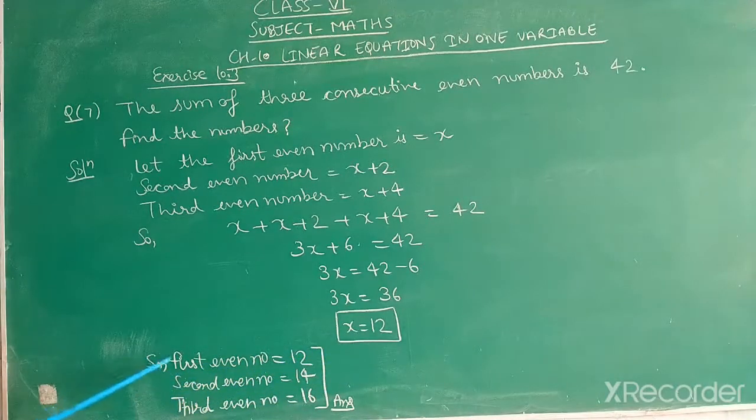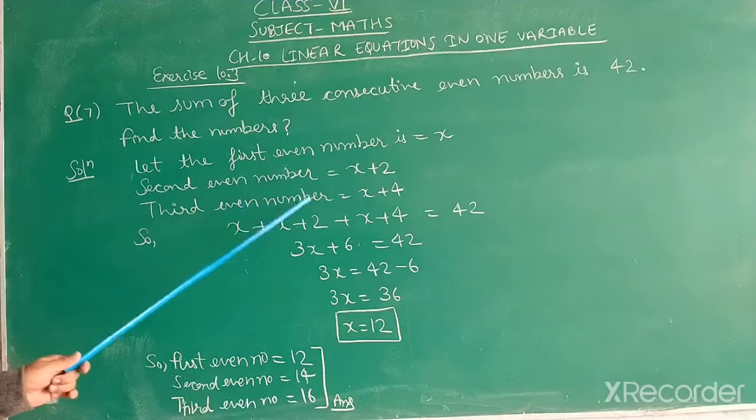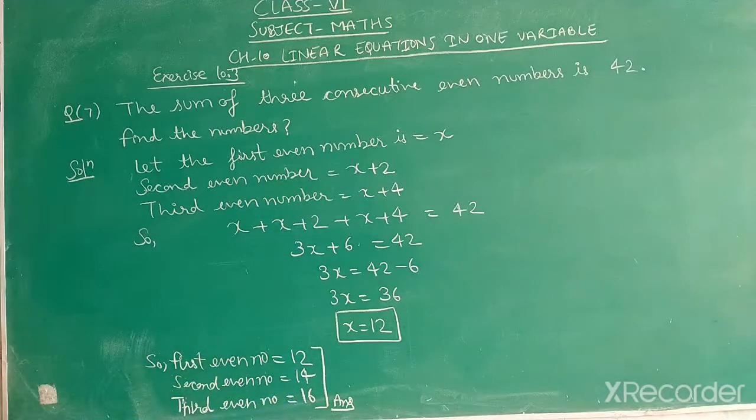So, we write the first even number is 12. Second even number is 12 plus 2, that is 14. And the third even number is 12 plus 4, that is 16.